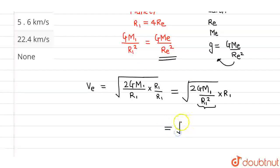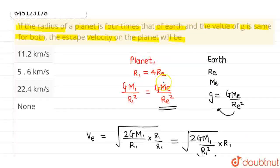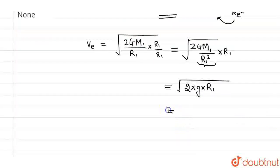So this is nothing but root over 2 times g into R1. And we also know that the value of R1 is nothing but 4 times the radius of Re, so this will be equals to root over 2 into g into 4 times Re.